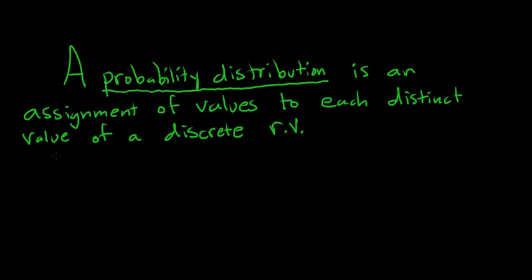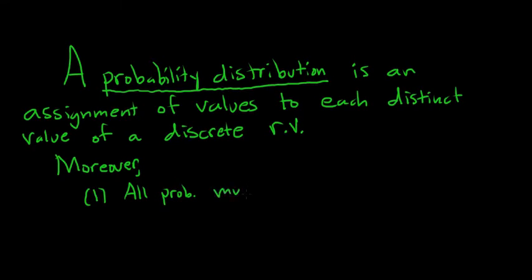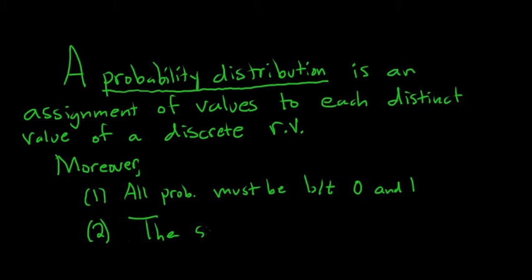There are two additional conditions. First, all probabilities must be between 0 and 1, inclusive — they have to be legitimate probabilities. Second, if you add up all of the probabilities, you should get 1. The sum of all probabilities equals 1.